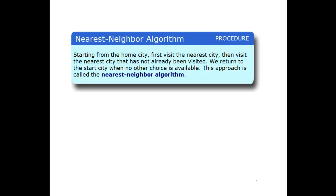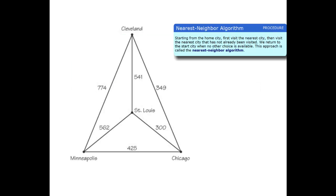So let's take a look at an example that will reflect the nearest neighbor algorithm. And we have our original example that we used brute force with. So in this example, we started at Chicago. So I'm looking at Chicago. I'm looking at the three routes stemming from Chicago. And I've got Minneapolis at 425, St. Louis at 300, and Cleveland at 349.